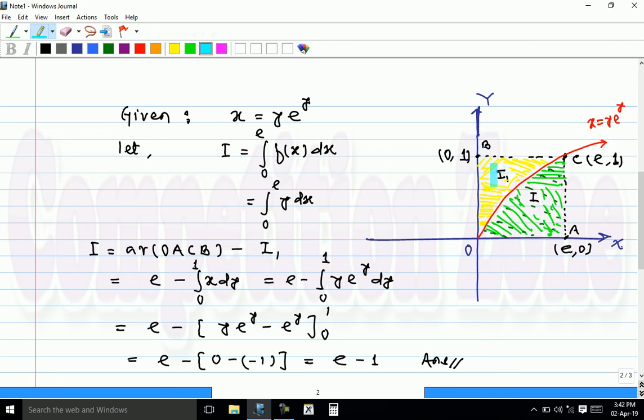Now what is i1? So i1 is in fact area between the curve and y-axis when y varies from 0 to 1. So i1 can be written as 0 to 1 x dy, or i1 can be written as 0 to 1 y e raised to y dy. And this is a very simple integral.